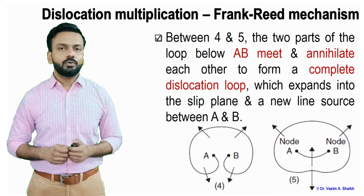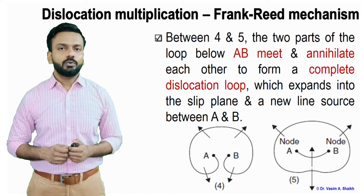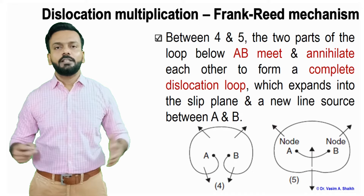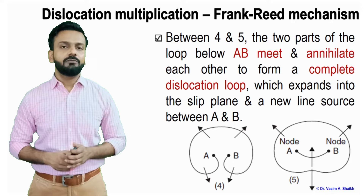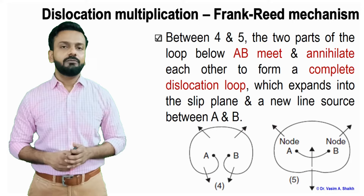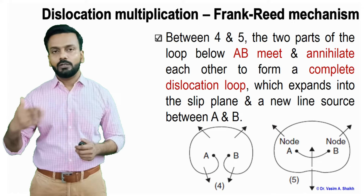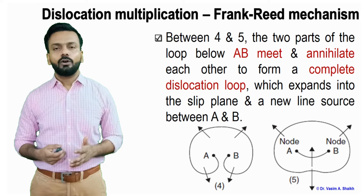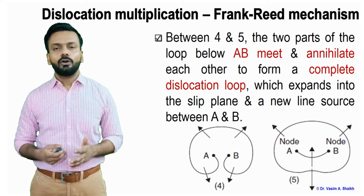The more you apply the load, it will bow out and finally come to a stage where it will annihilate each other. Between figures 4 and 5, the two parts of the loop between A and B meet and annihilate — meaning they destroy each other — and form a complete loop of dislocation. Then again, new nodes A and B will form. This process goes on and on; dislocations multiply and these nodes repeat themselves. Eventually, circles upon circles of dislocation loops are formed — this is called dislocation multiplication by Frank-Reed mechanism.